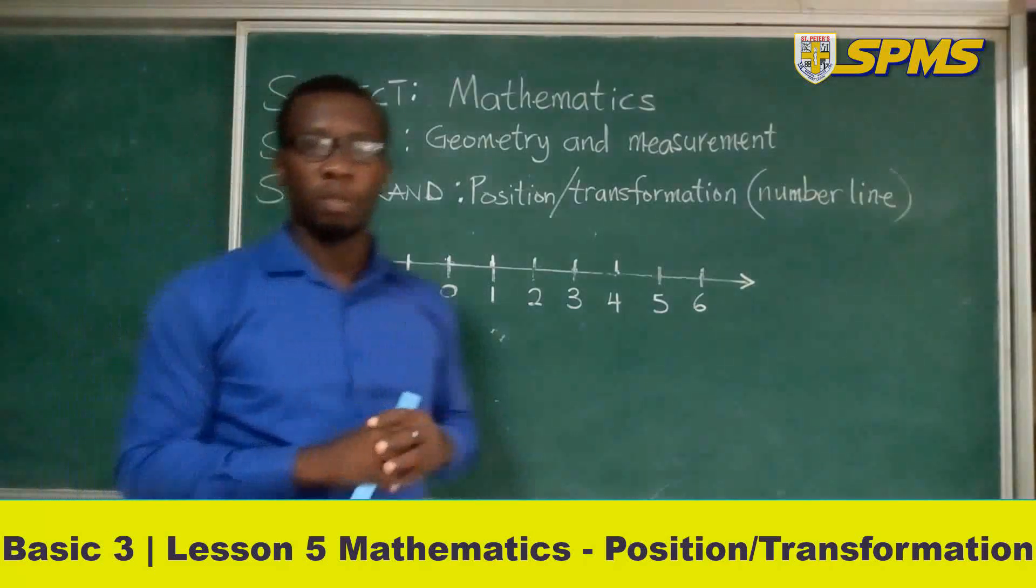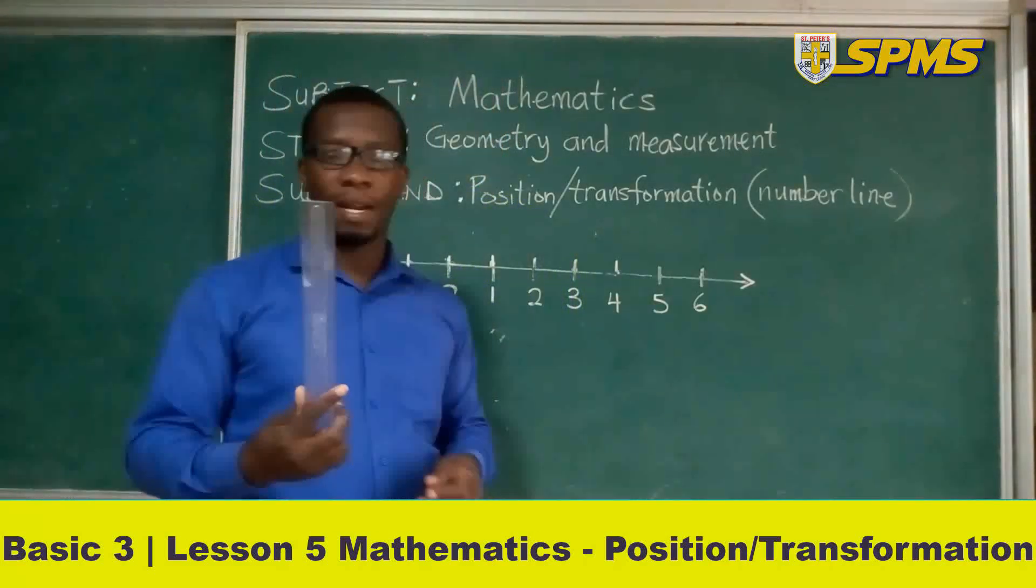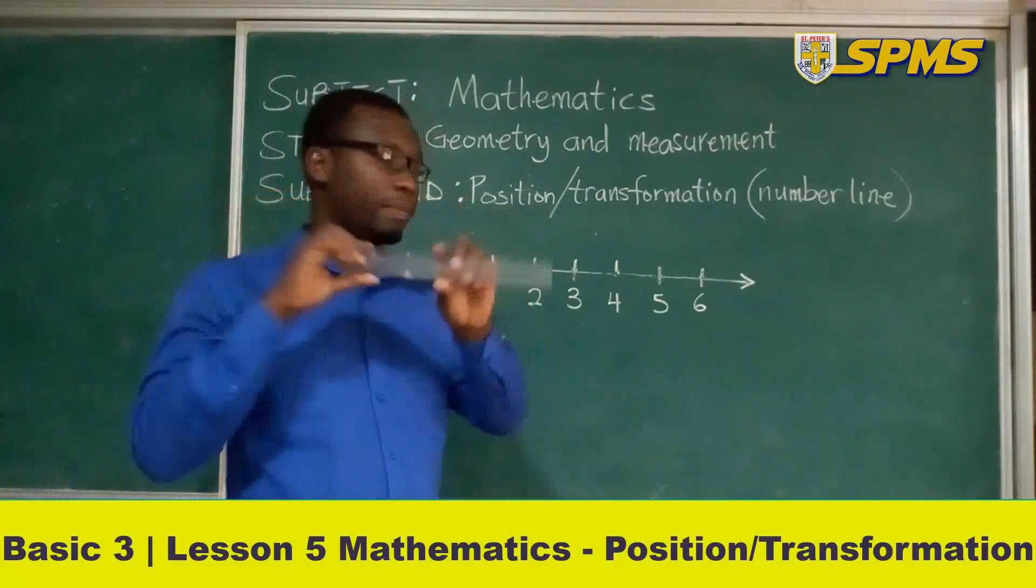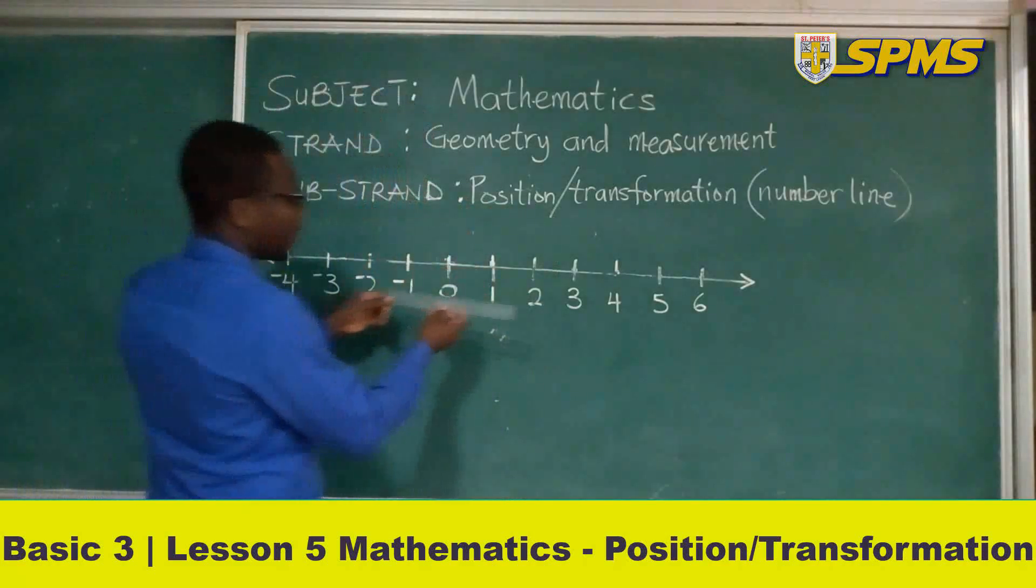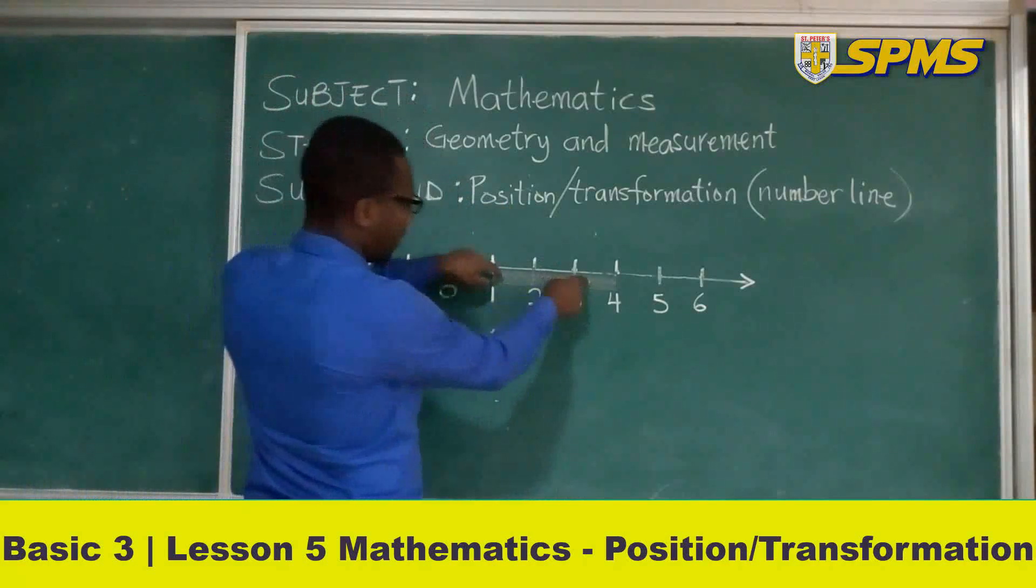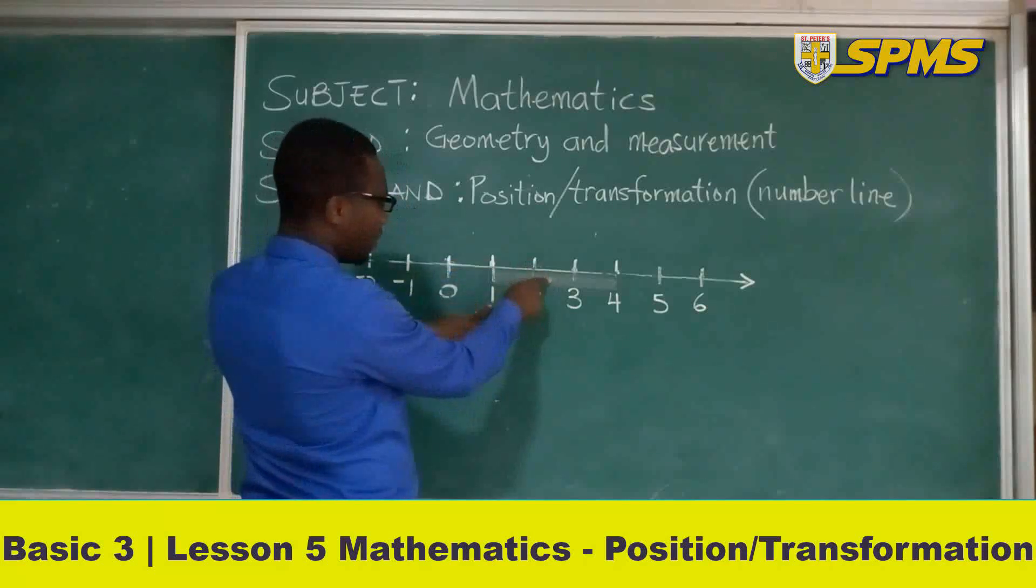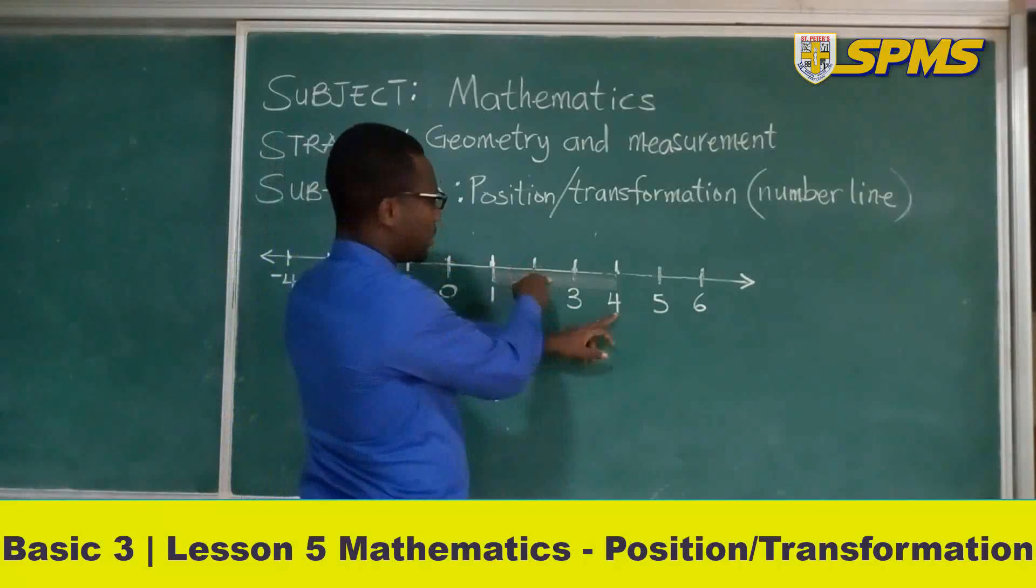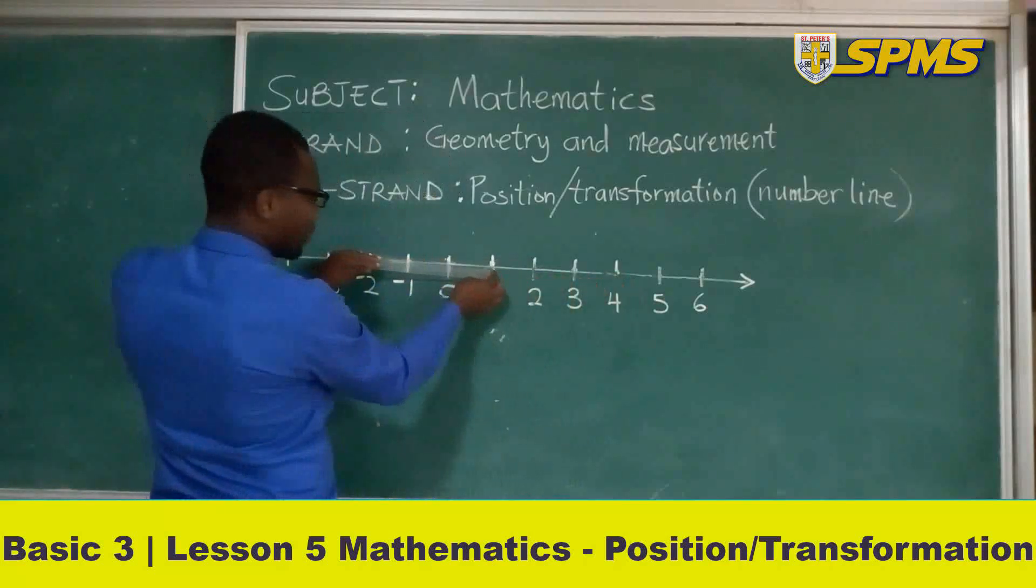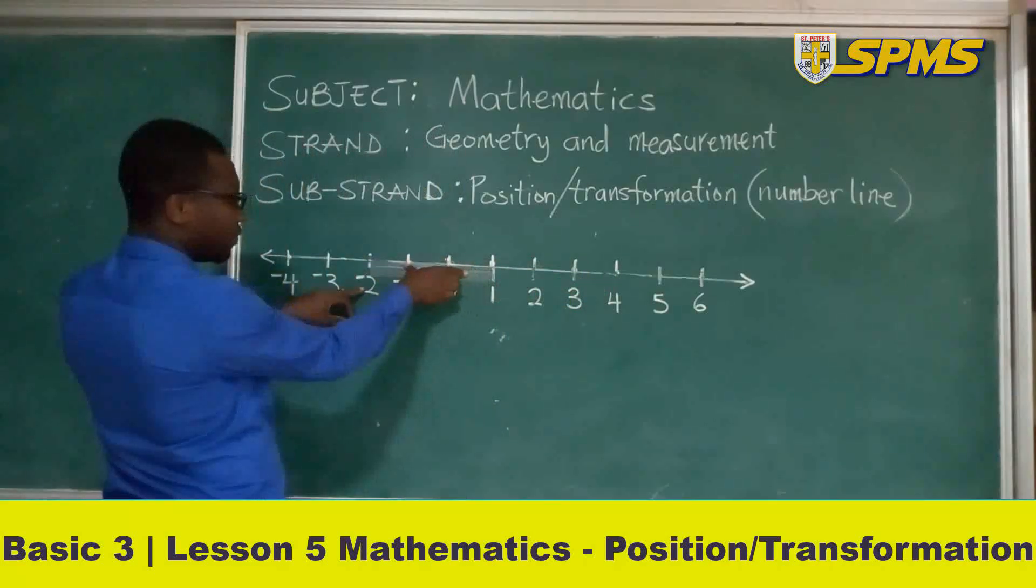I hope you got it. So let's pick another object. This is the normal ruler. We can also use the ruler to determine the distance between 1 and 4 to be the same as the distance between 1 and negative 2.